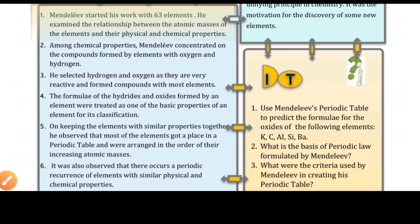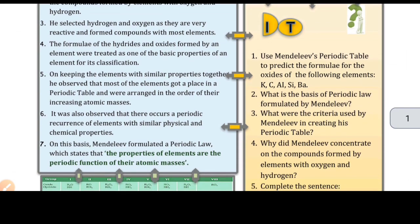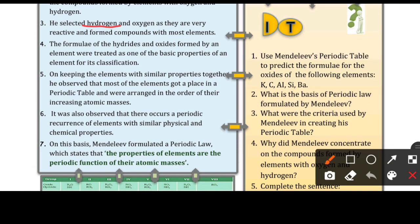Hydrogen and oxygen are very reactive and form compounds with most elements — almost all elements in the periodic table. When an element reacts with hydrogen it forms a hydride, and when it reacts with oxygen it forms an oxide. The nature of hydrides and oxides was treated as one of the basic properties of an element for its classification.